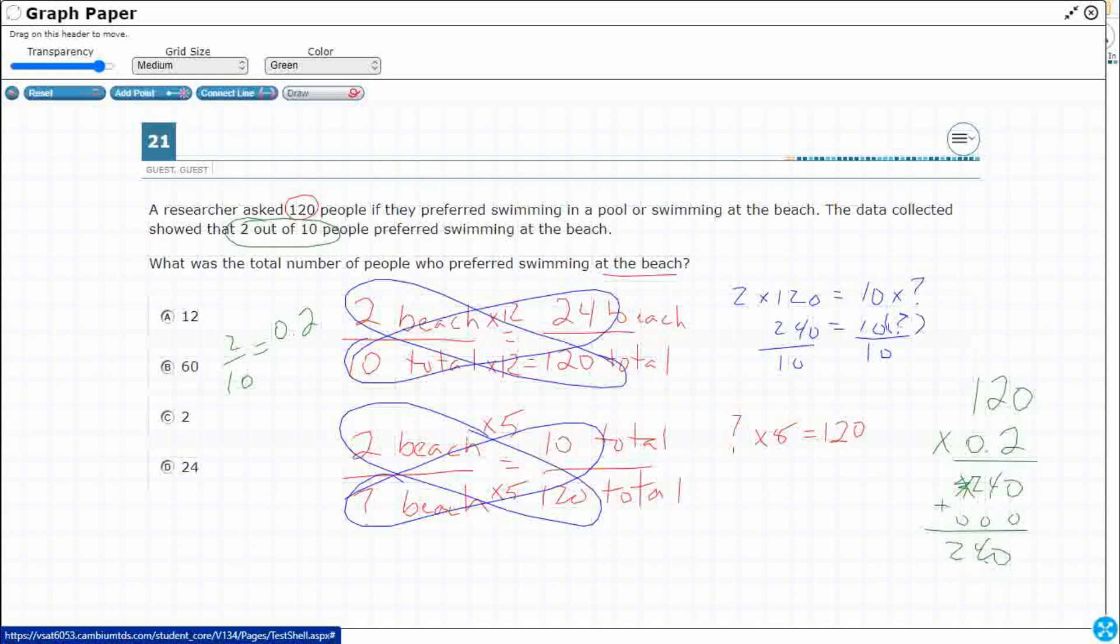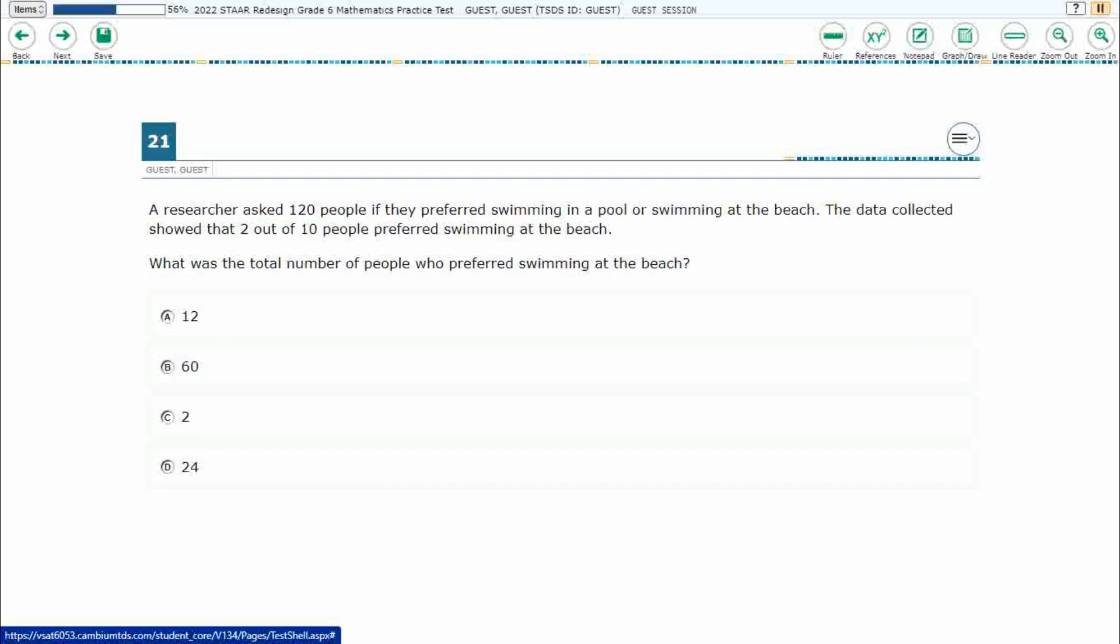So there's three different ways that we can do it. And quite possibly, there's even a fourth that we didn't discover here that you might have done on your own. Either way, our answer is going to be D, 24 people.